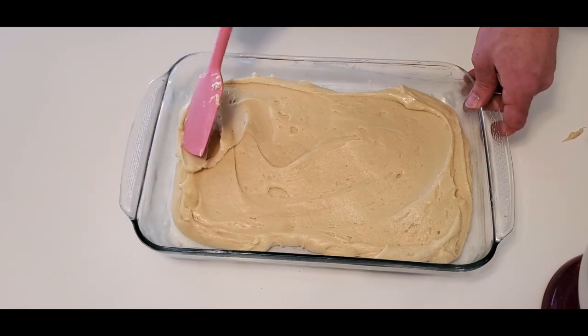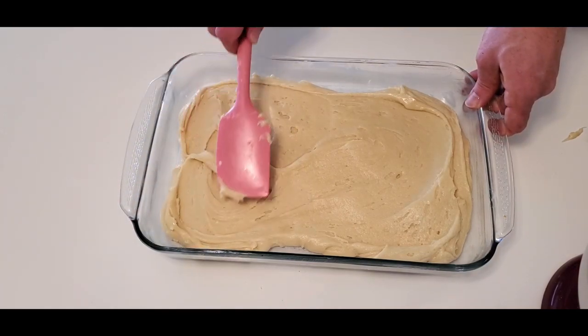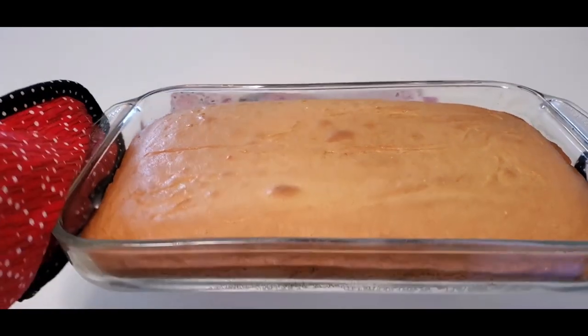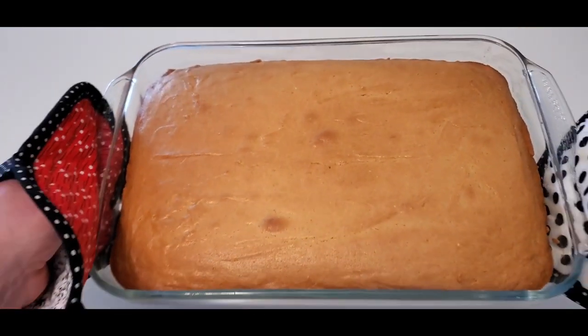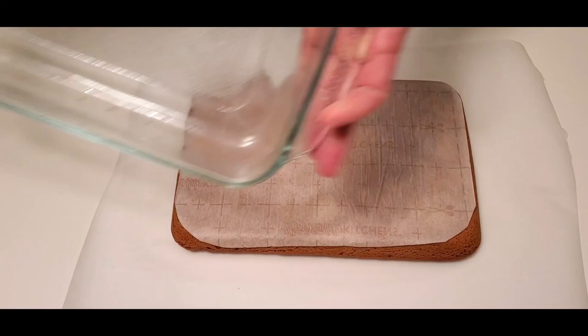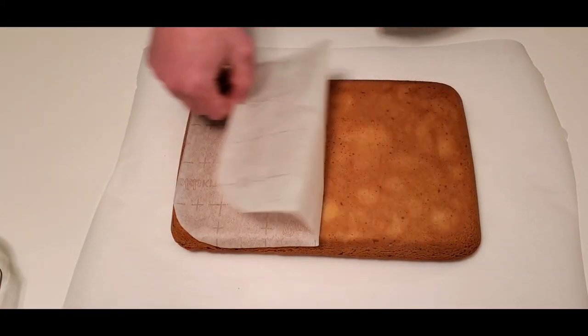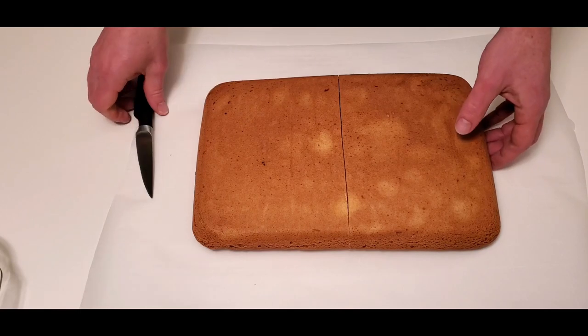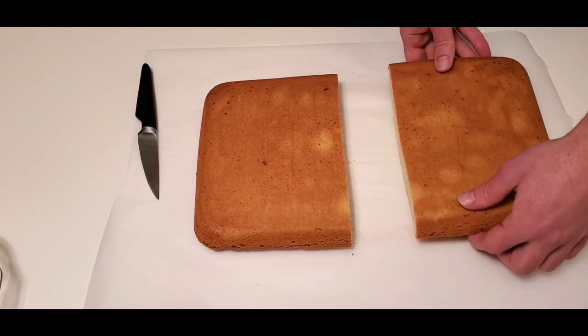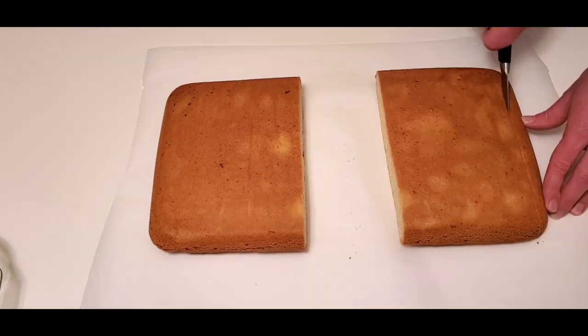Once you get all of your cake batter ingredients combined, pop this little mama in the oven and she comes out so golden and beautiful. She is so lovely. She treats you so nice. Once you take this golden girl out of the oven, you will begin shaping her into your favorite team's logo.